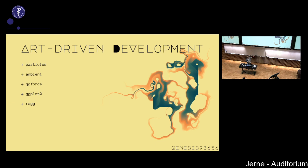ggforce and ggplot2 have been informed by my work because you have no idea what kind of weird edge cases you run into when you try to plot 70 million points at once. A lot of the speed-ups I've been trying to put into ggplot2 have been informed by that, so hopefully it will benefit everyone. The last package is ragg, which is a graphic device. When you type PNG and create a PNG image from your plots, ragg is similar but based on another underlying library called AGG. The default graphic devices in R are a bit ancient and not that fast, so I'm trying to push that — and hopefully we can push it into R as well.